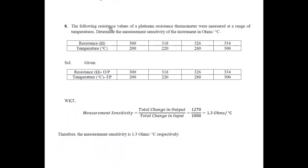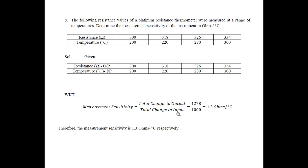The eighth problem: the following resistance values of a platinum resistance thermometer were measured at a range of temperatures — determine the measurement sensitivity of the instrument in ohms per degree centigrade. Measurement sensitivity is total change in output divided by total change in input. Substituting the given resistance and temperature values, the measurement sensitivity is 1.3 ohms per degree centigrade.